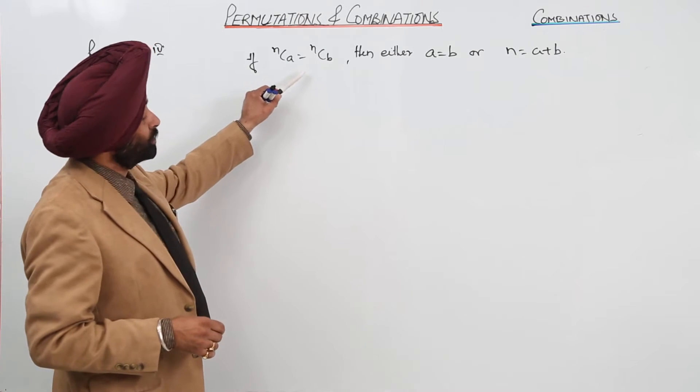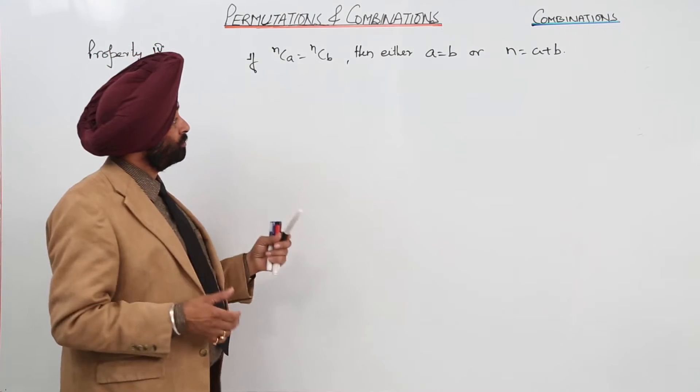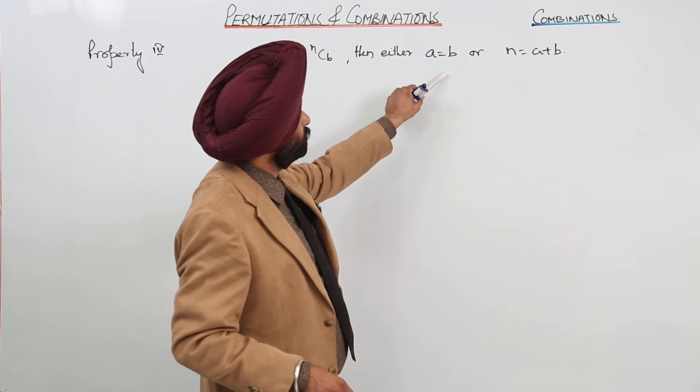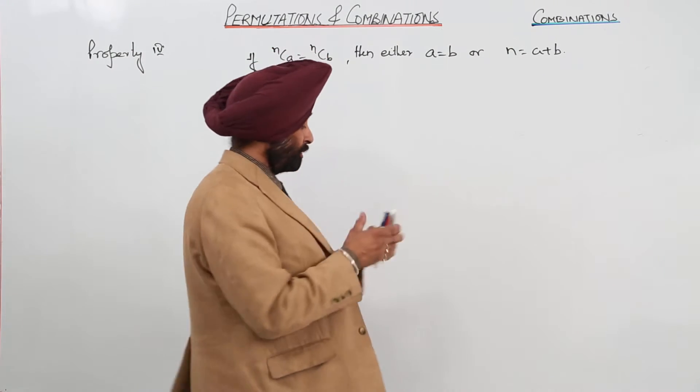If we are having nCa equal to nCb, then what are the conditions? We are having conditions either a is equal to b or n is equal to a plus b.